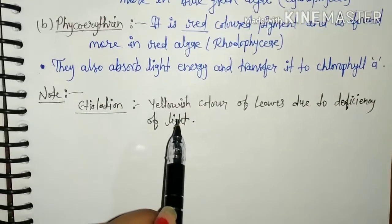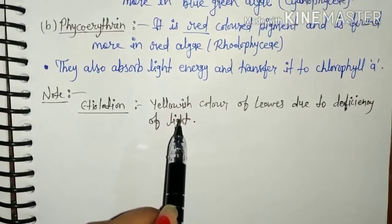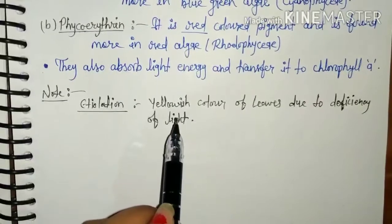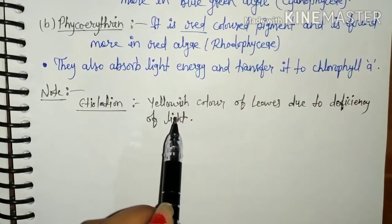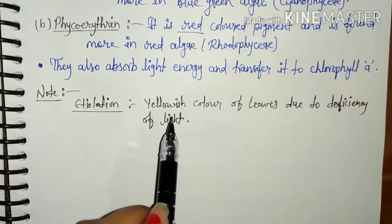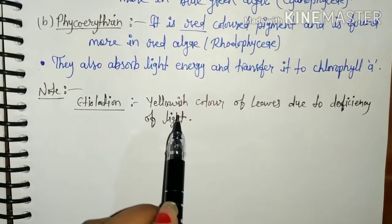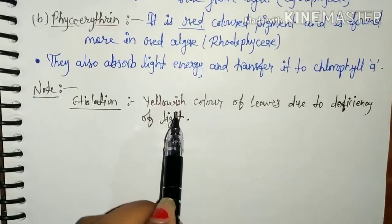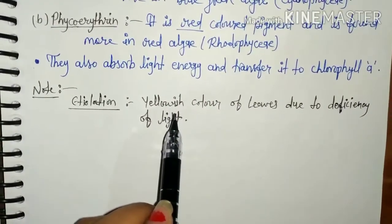For example, chili is green in color and converts into red color, which is part of the chromoplast organization.